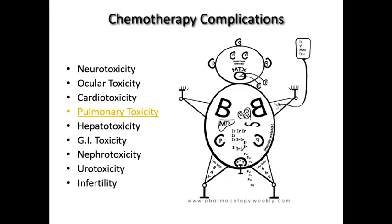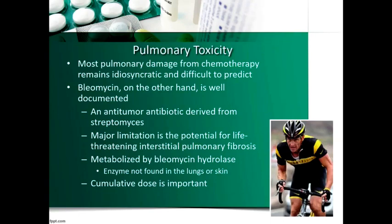Pulmonary toxicity — on chemo man we see two big Bs for bleomycin. Bleomycin causes pulmonary fibrosis because it accumulates in the lungs where there is no bleomycin hydrolase, causing free radical damage. Cumulative dose is important: 400 units is a lifetime max, but studies show 360 units or more can lead to about a 20% chance of high-grade lung toxicity. We should avoid bleomycin if possible, and if needed, keep the dose reasonable.